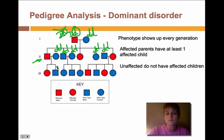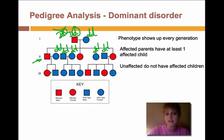We can also come down into the next generation and look at this affected male. If we want to figure out his genotype, we can look at his children and say: he has one child that's affected but also a child that's not affected, which means that his genotype is going to be heterozygous.